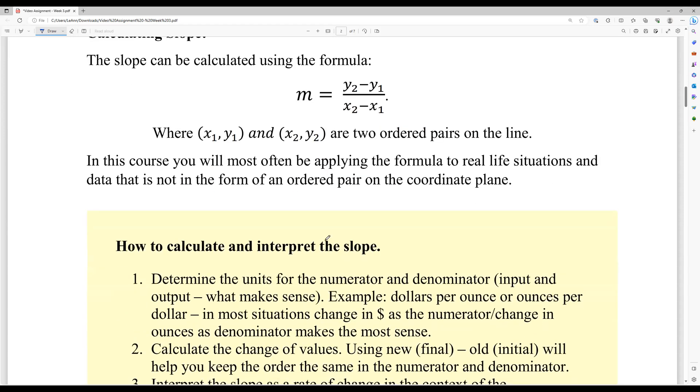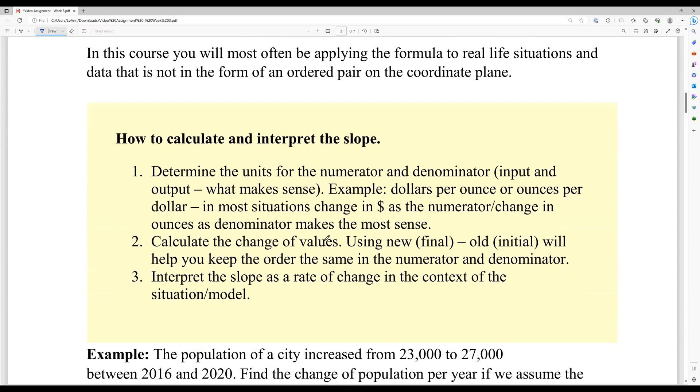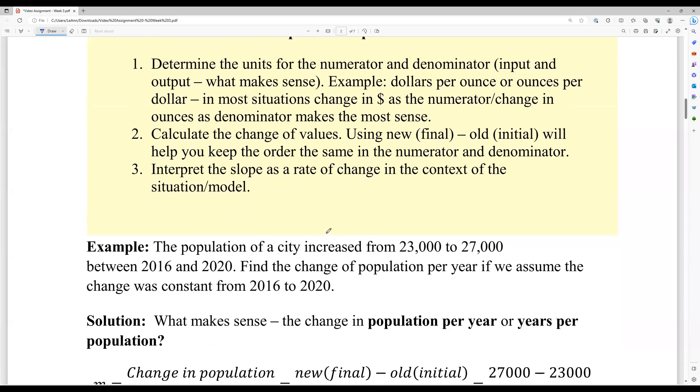We'll be applying this formula more likely to real life situations, not so much the ordered pairs. So how do we get calculated in Math 123? We'll determine the units for the numerator and the denominator. So what's the input and output? What makes sense? Example, dollars per ounce or ounces per dollar. Most situations you would talk about dollar as the numerator and the other part usually is the denominator. We'll calculate the change of values, using the new minus old setup to help us keep the order same in our numerator and denominator. And then we'll interpret the slope as a rate of change in the context of the situation or model.